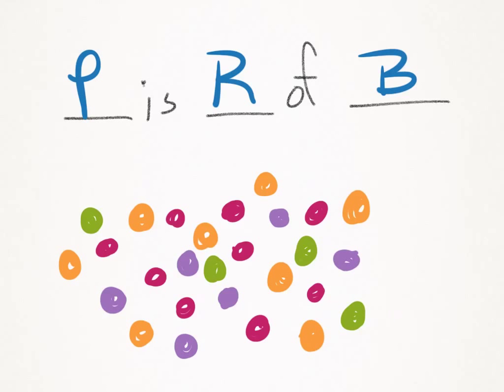So let's take a look at an example. Here I've drawn 27 pieces of candy. Now 27 represents our base. Our base is always going to be the largest number represented. What I want to know is, of those 27 pieces of candy, how many are orange? So the orange candies represent the percentage of the base.